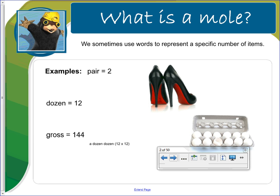So what is the mole? We sometimes use words to represent a specific number of items. We talk about a pair, we know that means two. We talk about a dozen, and you know it means twelve. And then gross, you may not know this, but it's a dozen dozen, so 144.